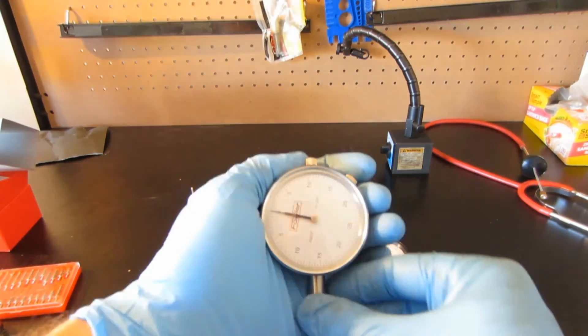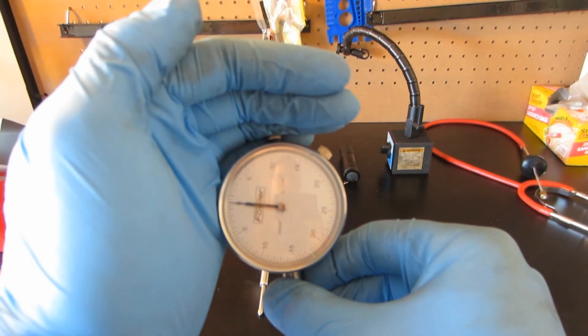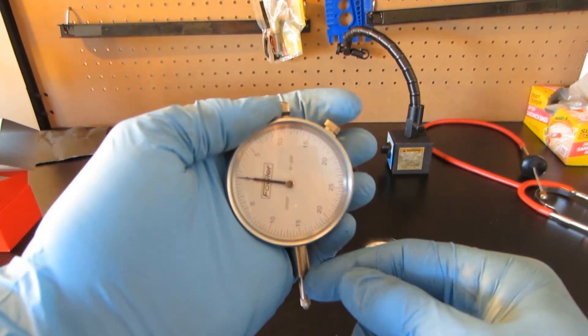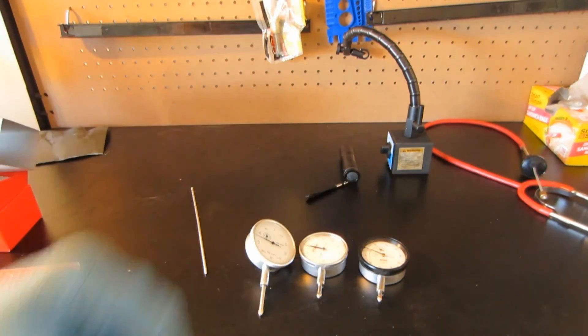The last gauge is accurate to the half thousandth, and has an overall travel of a half inch. The idea is to choose the most accurate gauge you have with enough travel to complete the task. Happy Boosting!